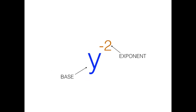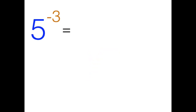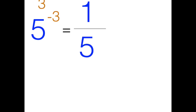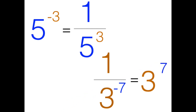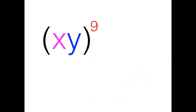As for the exponents — if negative, we make them positive. If it's on the top, we bring it down. And if it's on the bottom, then we need to bring it all the way from the bottom to the top.